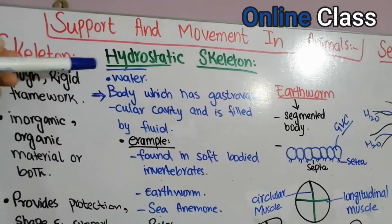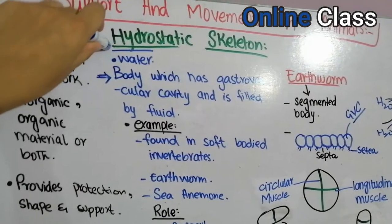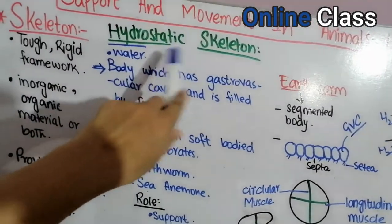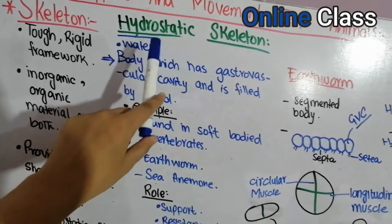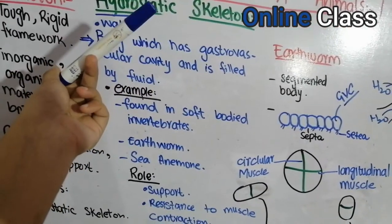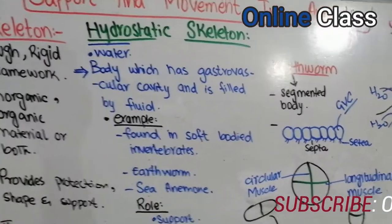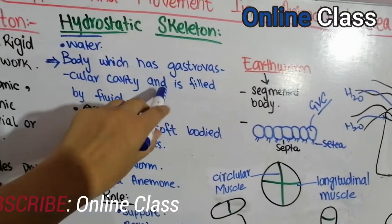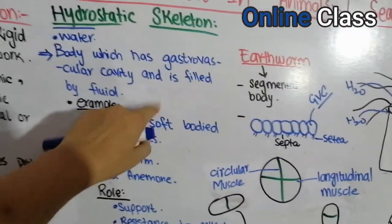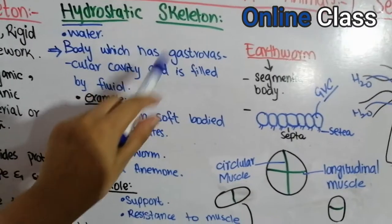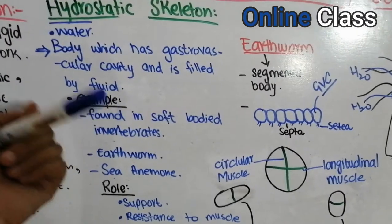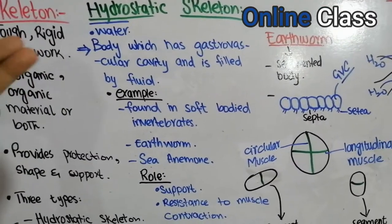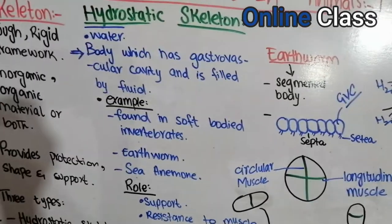The word 'hydro' refers to water. A hydrostatic skeleton means that the body of the organism has a gastro-vascular cavity filled with fluid, which we call the hydrostatic skeleton. This gives rigidity and support to the body structure.